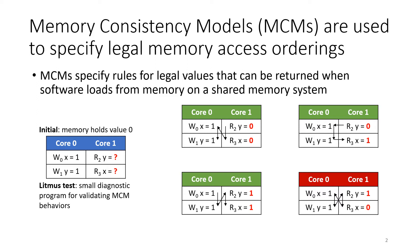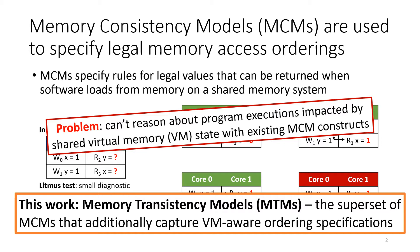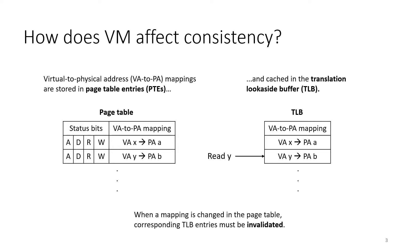While MCMs are valuable for defining these fundamental ordering rules, they do have some limitations. Namely, MCMs are not sufficient for reasoning about the software-visible effects of virtual memory on program executions. To account for this shortcoming, this work focuses on formal specification of Memory Transistency Models, or MTMs, which define the superset of MCMs that additionally capture virtual memory-aware orderings.